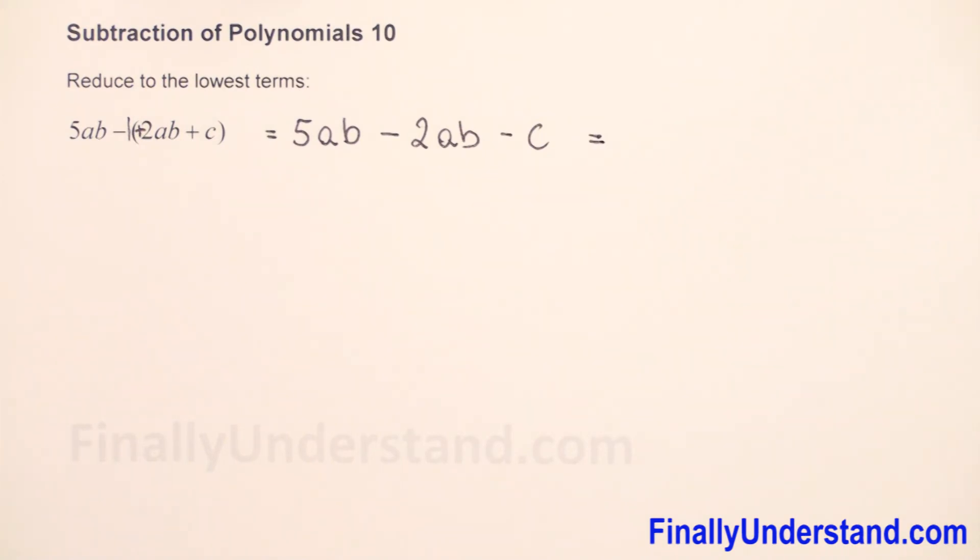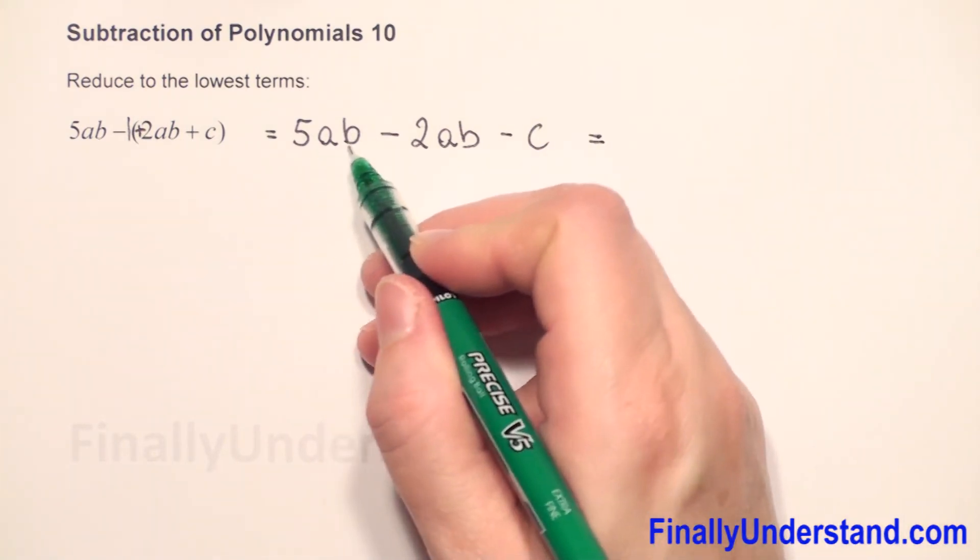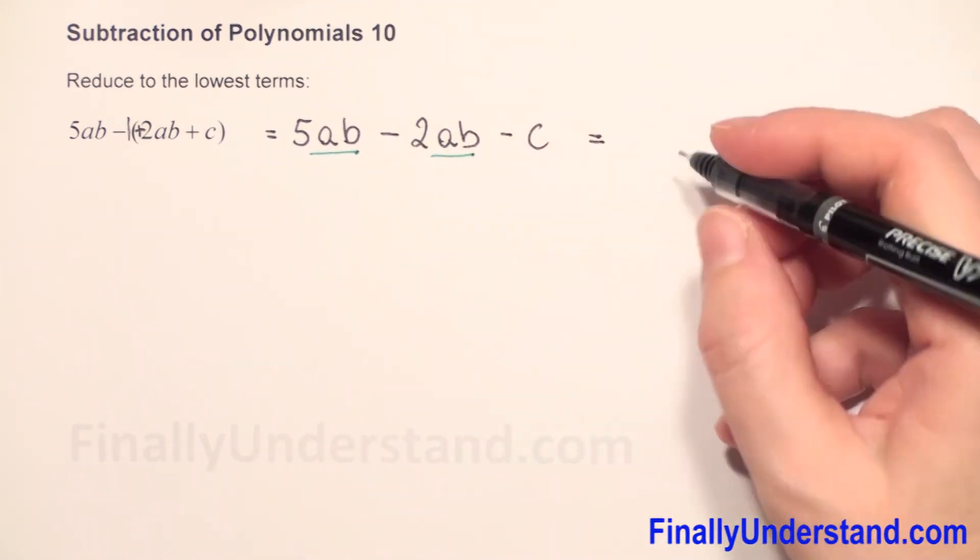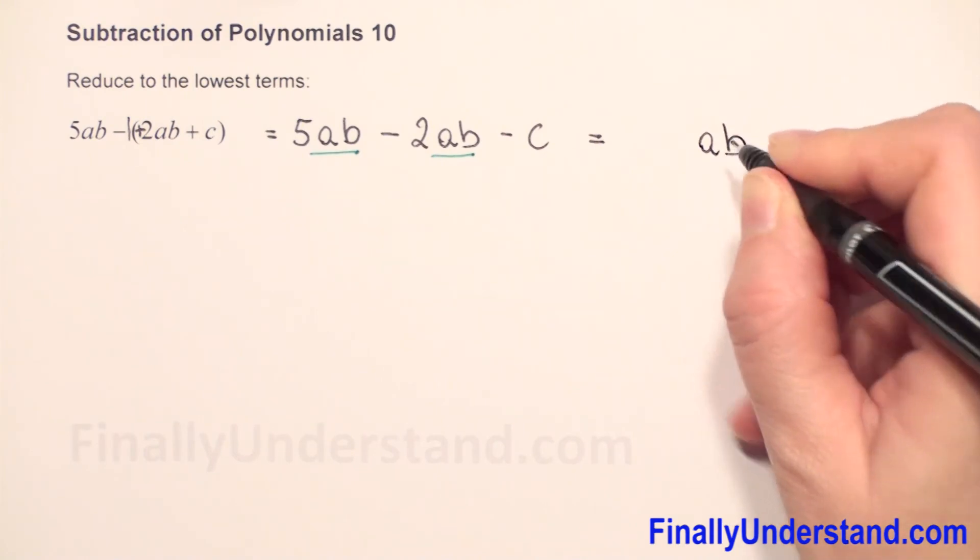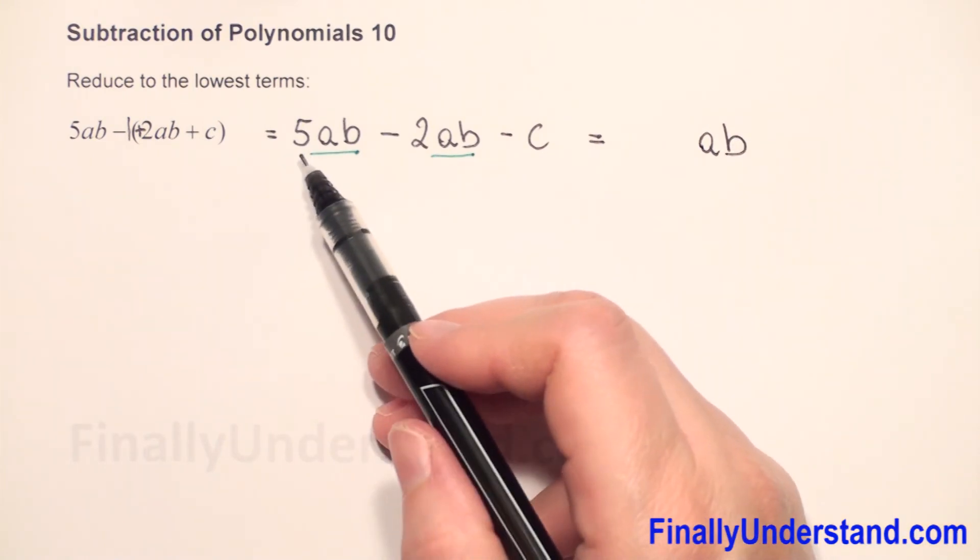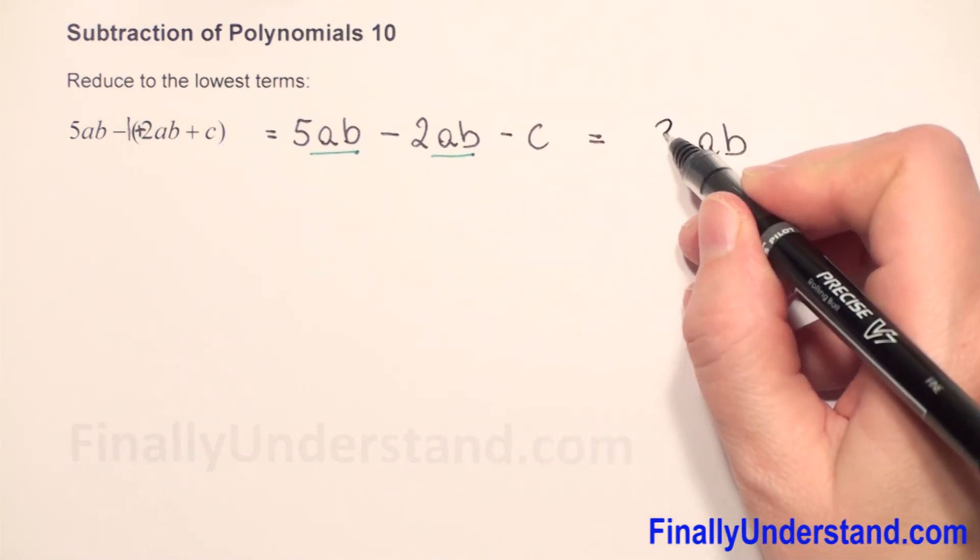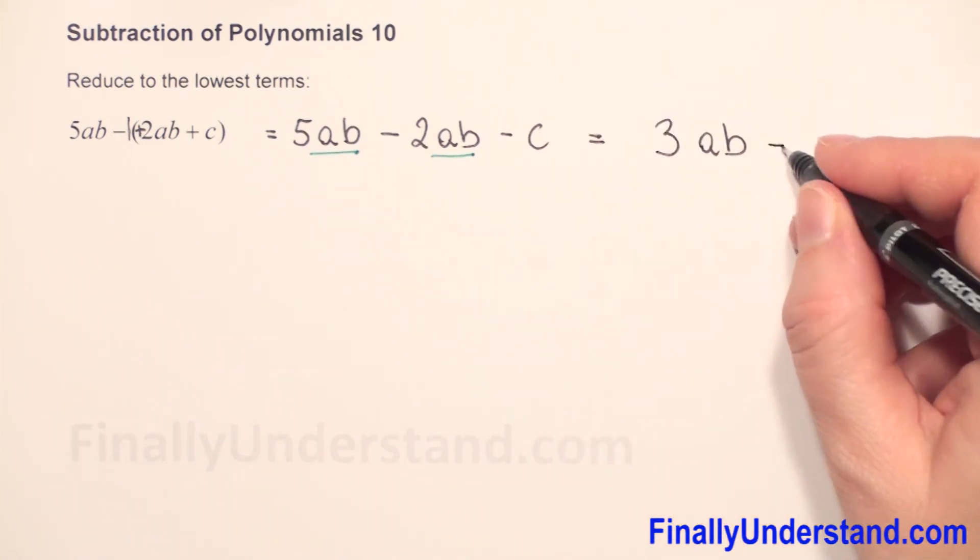So the same variable we need to have. We have ab variables and ab. So we have to copy ab and now we have to just subtract the coefficients. We have 5 minus 2, this is 3, and we have negative c.